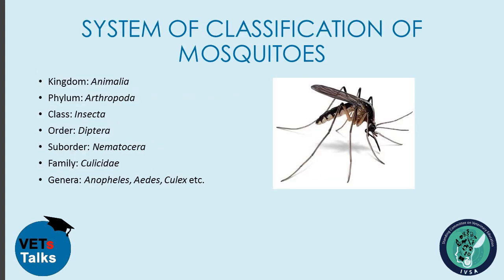Looking at the system of classification of mosquitoes: biologically, mosquitoes belong to Kingdom Animalia, Phylum Arthropoda, Class Insecta, Order Diptera, Suborder Nematocera, Family Culicidae. There are three genera of importance in the country, which are Anopheles, Aedes, and Culex.